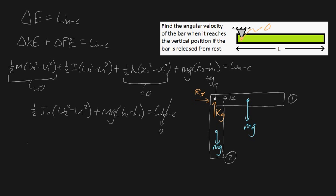Expanding this out, we have one-half I_O times ω2² minus ω1². Since the bar is released from rest, ω1 = 0, so that term drops out. We're left with one-half I_O ω2² plus mg(h2 - h1) = 0. Because we've placed our axis at the pin, h1 = 0. For h2, you must measure from the axis to the center of mass — so h2 = -L/2, since the center of mass moves downward by L/2.